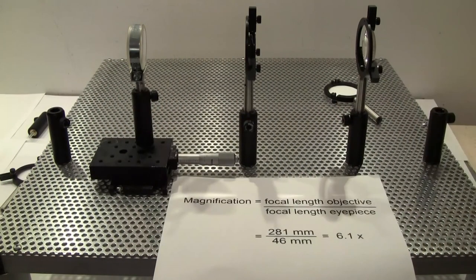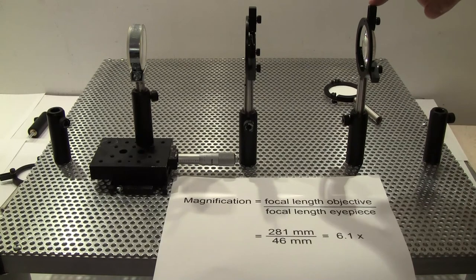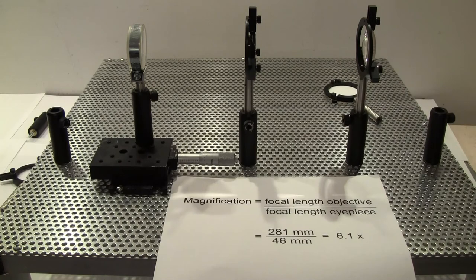One final point about our little telescope here is how to calculate the final magnification. We measured the focal length of the objective lens and the focal length of the eyepiece lens. It's a very simple equation - the focal length of the objective divided by the focal length of the eyepiece gives your magnification. Since the values were 281 and 46, this gives us an ultimate magnification of 6.1 times, which is fairly modest but this is what we were able to put together with the lenses we had on hand.